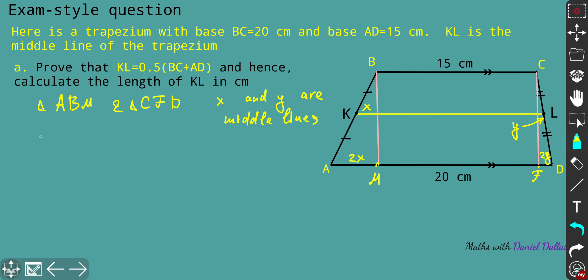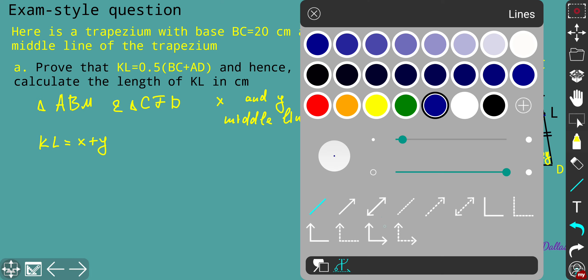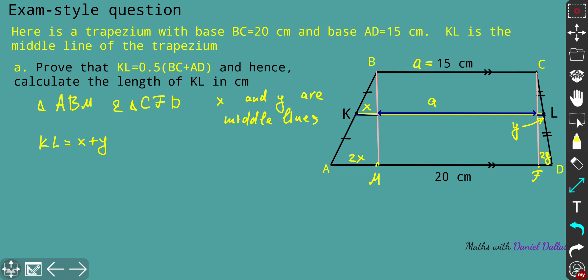That means we can represent the KL line through x and y, and the base also we can express through x and y. KL, the whole mid-segment, is going to be x plus y, and the rest segment. Let's denote BC as a. On top of that you will add a, so that's how we write KL length.